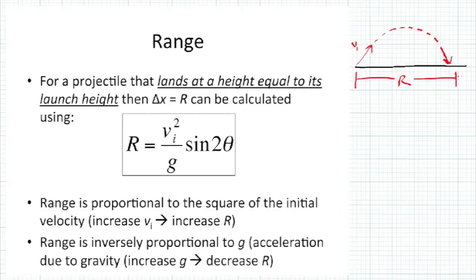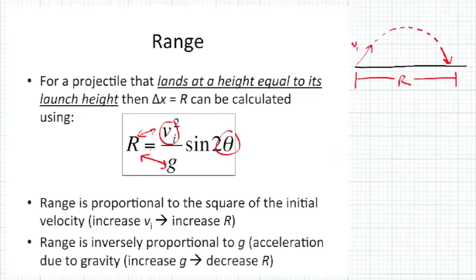If you know the initial velocity and the angle theta, we can see that range is proportional to the square of the initial velocity, and inversely proportional to gravity. So as gravity increases, you'd have less range. On a moon where gravity is one-sixth of Earth's, you should be able to kick or throw something six times further.